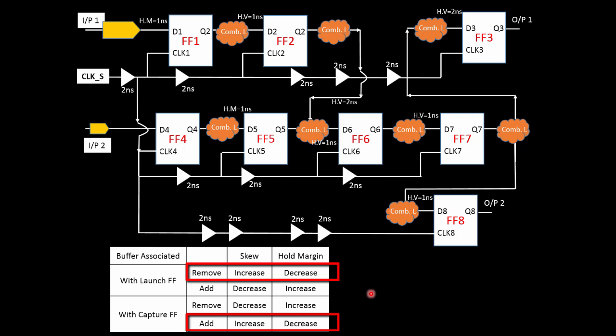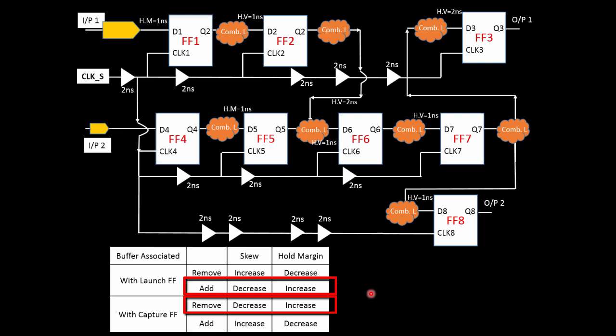Increasing clock skew means you are decreasing the hold margin — the possibility of hold violation increases. Conversely, adding a buffer in the clock path of the launch flip-flop, or removing a buffer from the clock path of the capture flip-flop, decreases the clock skew, meaning you are increasing the hold margin and fixing the hold violation. Since we have many hold violations, we will focus on this second technique.